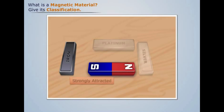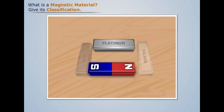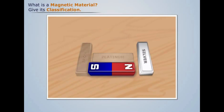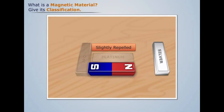The iron bar gets strongly attracted by the magnetic field and moves towards the magnet immediately. The platinum bar gets slightly attracted by the magnetic field and moves slowly towards the magnet. And the silver bar gets slightly repelled by the magnetic field and moves away from the magnet slowly.